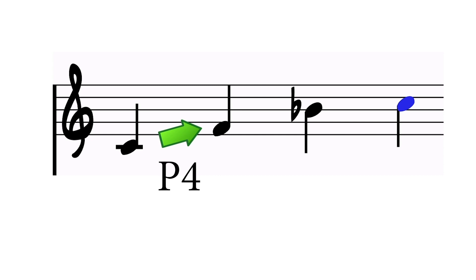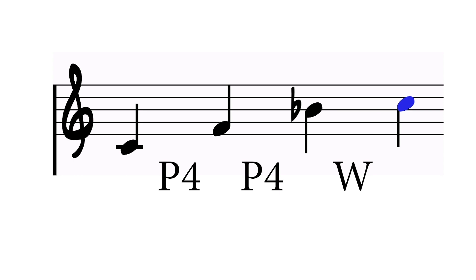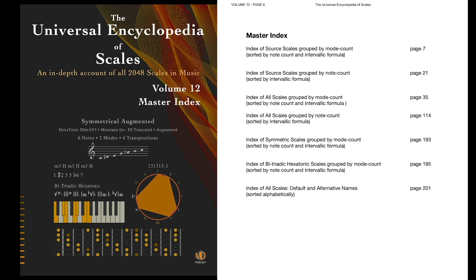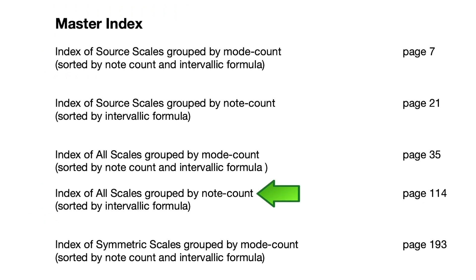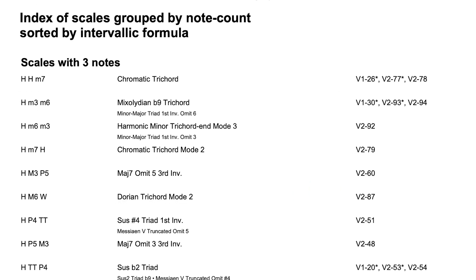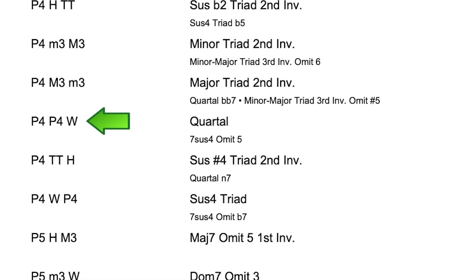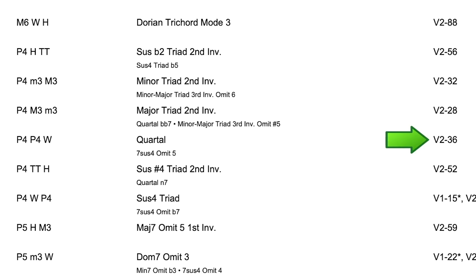So let's say I have C, F, and Bb as my scale. How do I find it? C to F is a perfect fourth. F to Bb is another perfect fourth. And Bb to C is a whole step. So the intervallic formula is perfect fourth, perfect fourth, whole. This scale is a three-note scale. We can use the index of all scales grouped by note count, sorted by intervallic formula, page 114. The intervallic formulas are sorted alphabetically. There it is — perfect fourth, perfect fourth, whole. It's a quartal in volume 2, page 36.